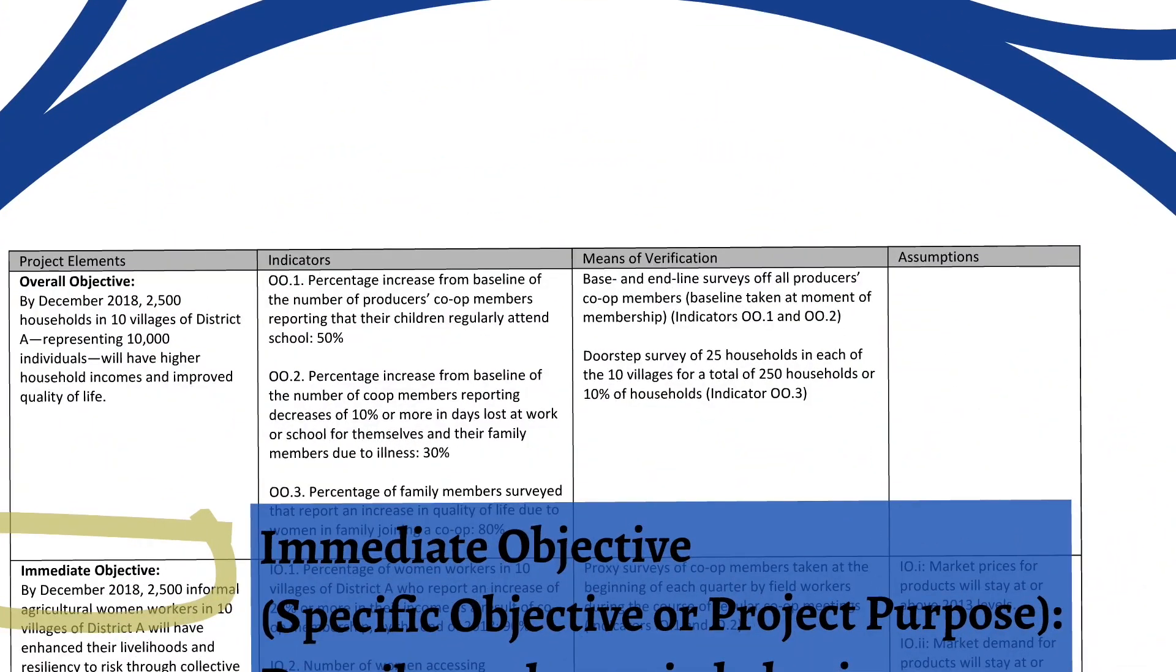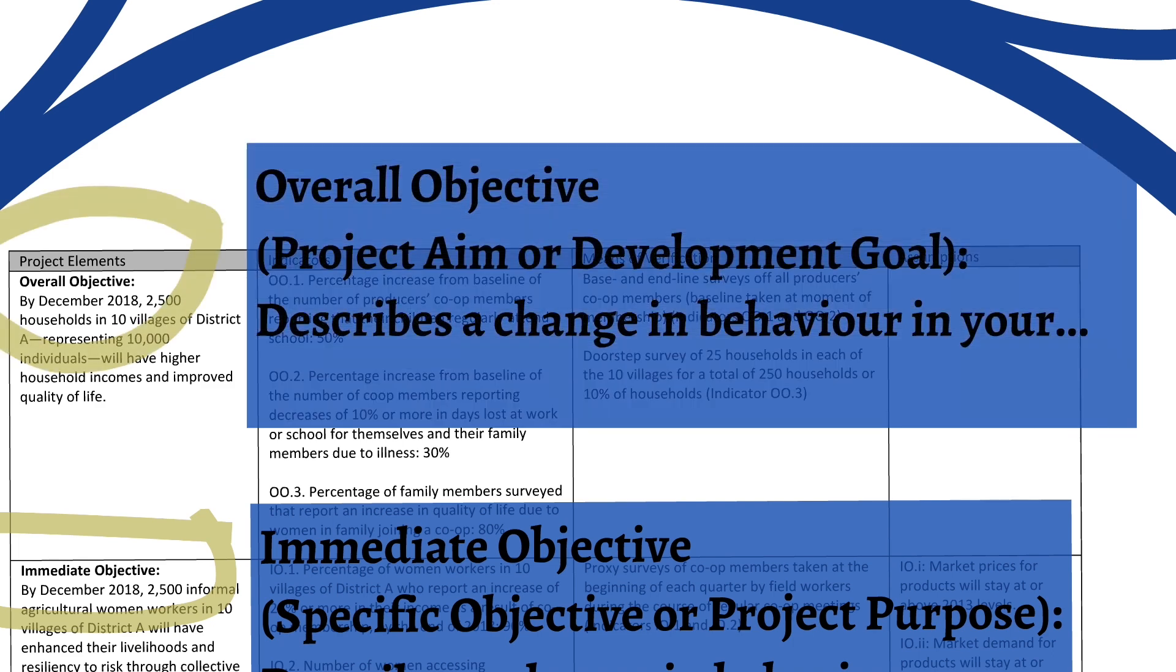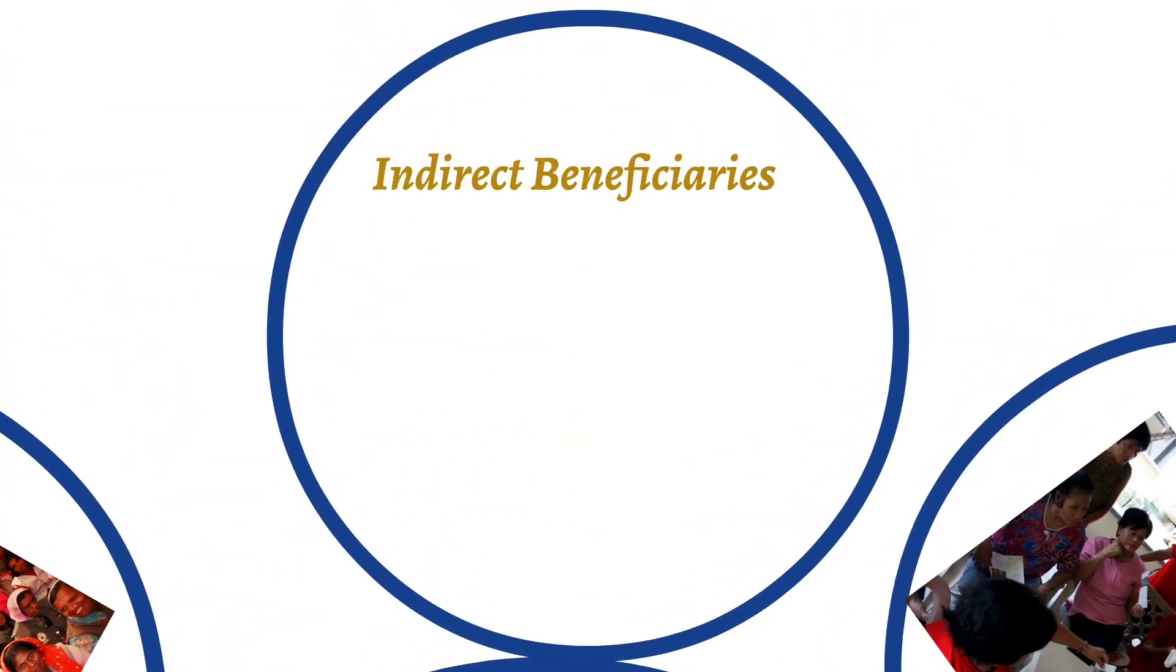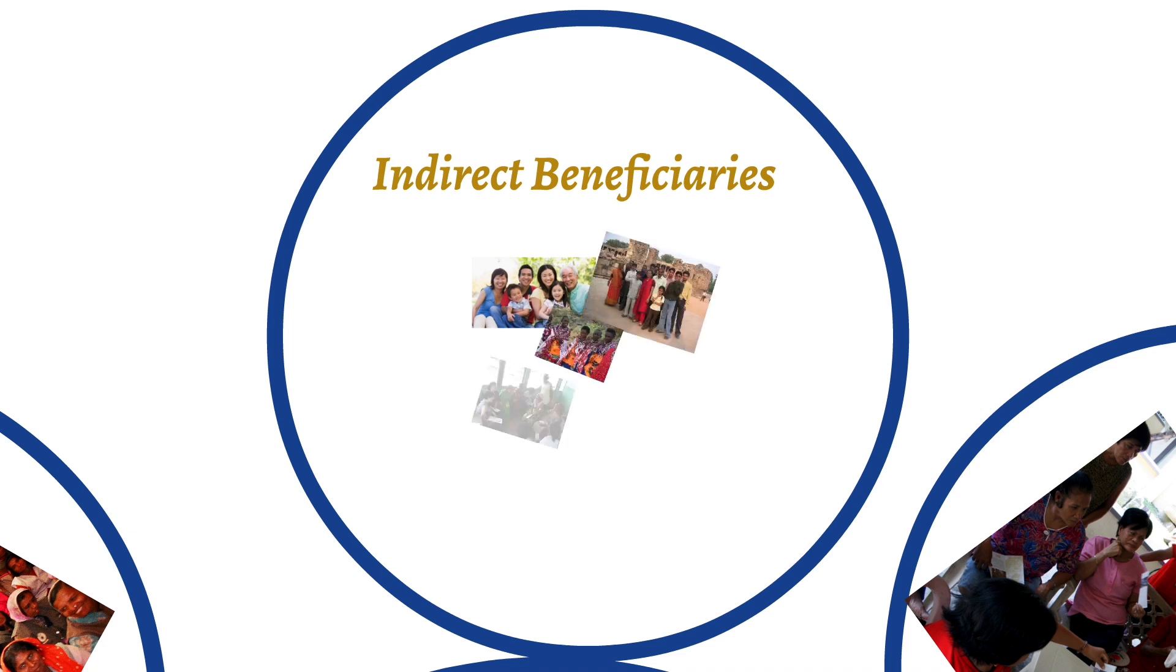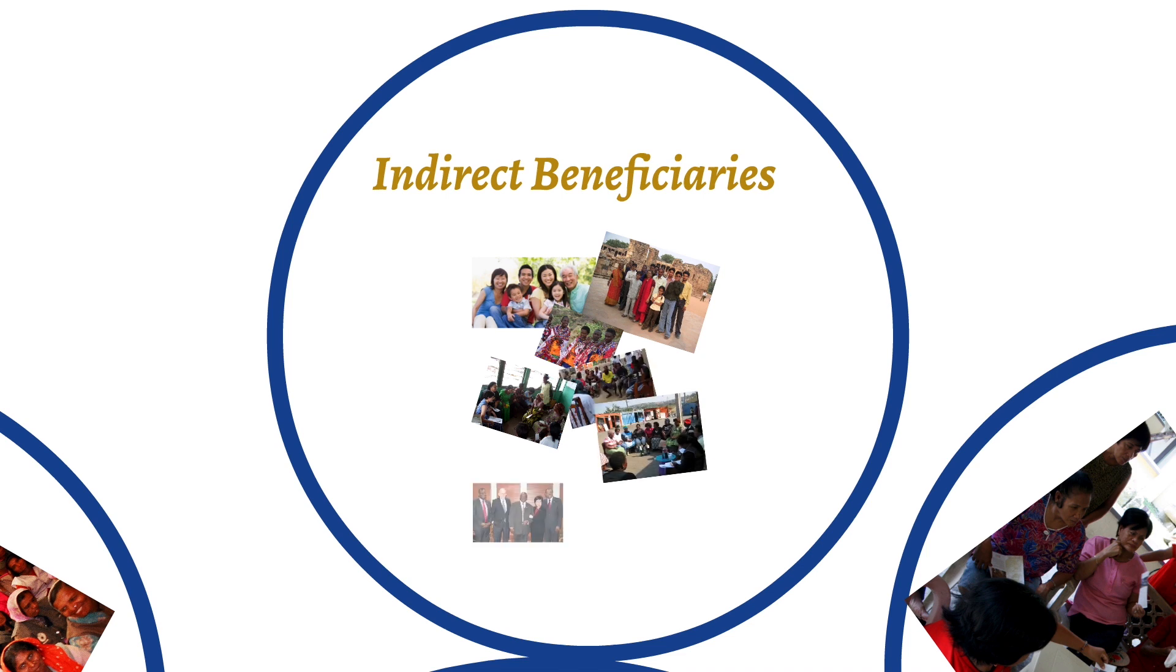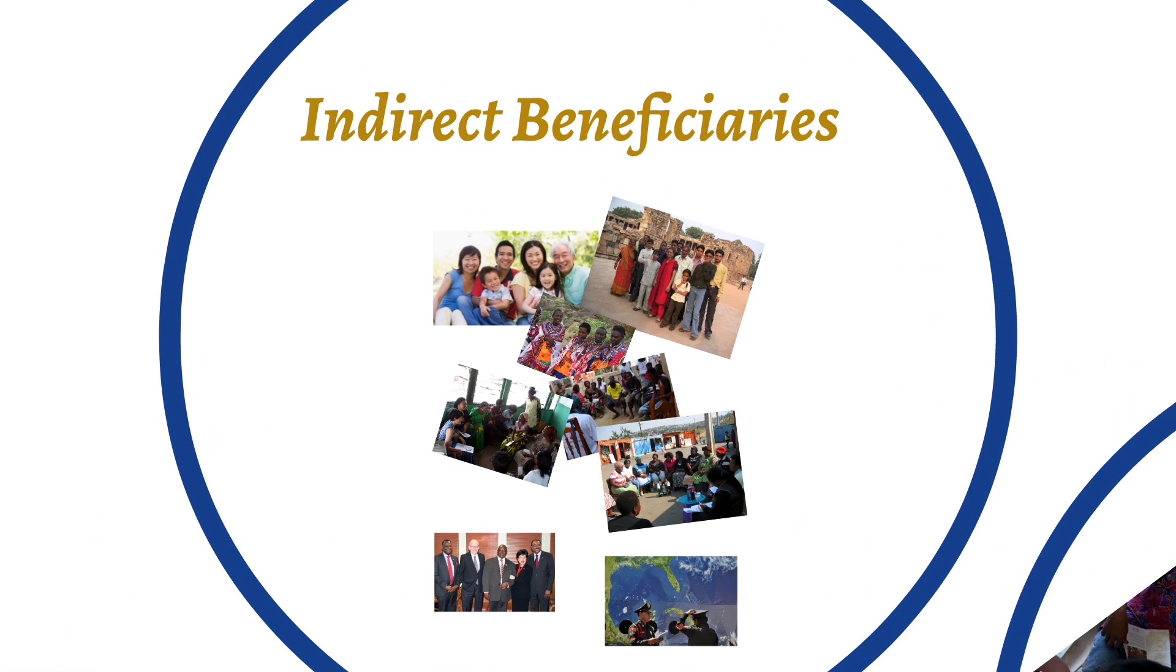The next project element I want to look at is the overall objective. And this is sometimes also called the project aim or the development goal. And the overall objective describes a change in behavior in your indirect beneficiaries. So the target group is your direct beneficiaries. These are your indirect beneficiaries. And they are people who benefit from your project, but who aren't directly targeted by your project. And they're usually benefiting through association with your target group. So they can be members of your target group's families. They can be their co-workers or community members. They could be government officials or police officials or law enforcement officials. Anyone in the community or the families of the target group who will indirectly benefit from the project.